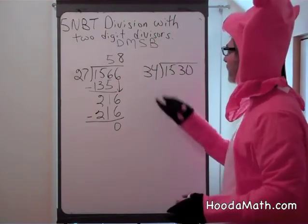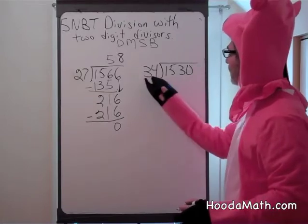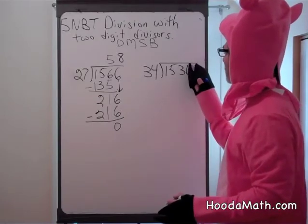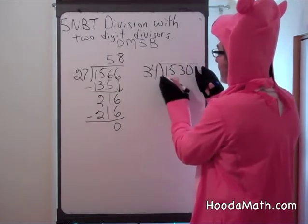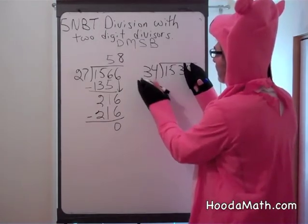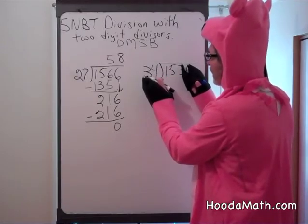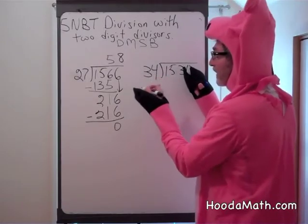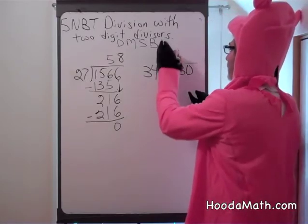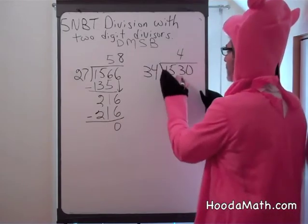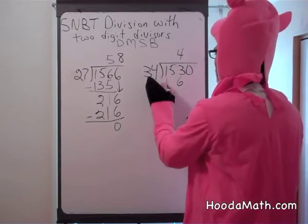Let's try it with this problem: 34 into 1,530. 34 is about 30, a little bit bigger. 30 into 153 — we can think of 3 into 15, which is 5. But since 34 is a little bigger than 30, we should not put a 5 but a 4. 4 times 4 is 16. 4 times 3 is 12, and one more is 13.